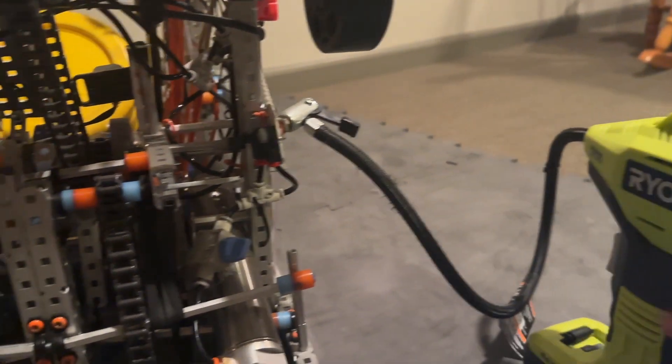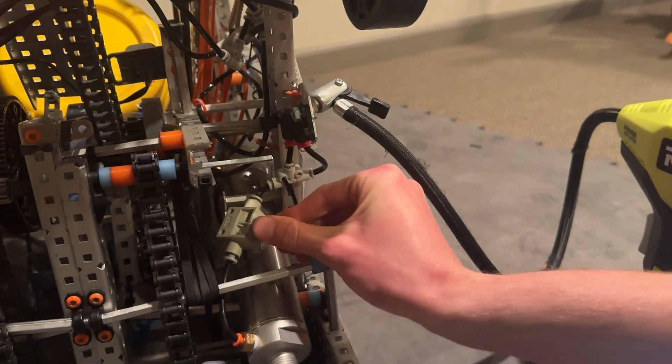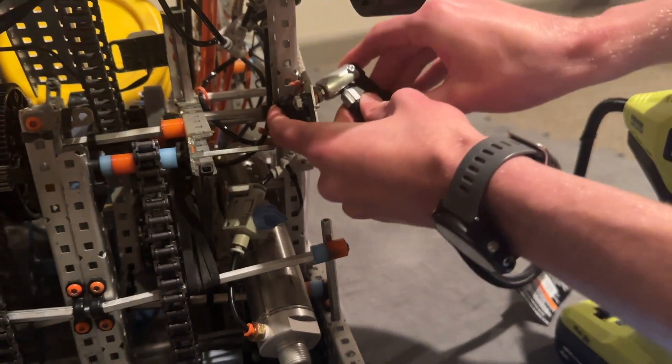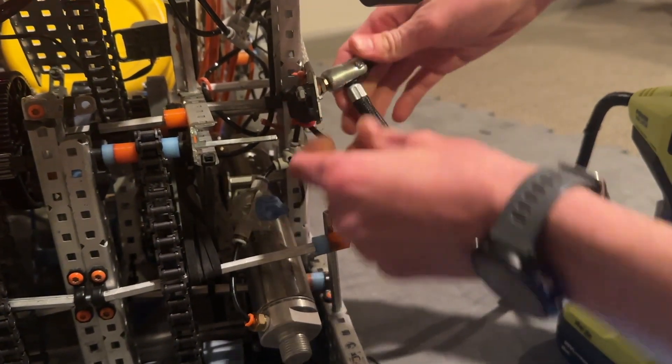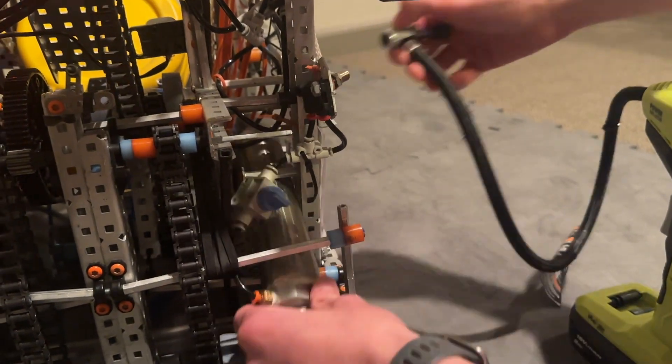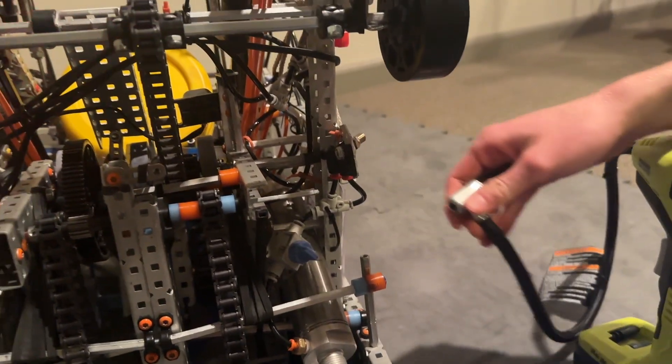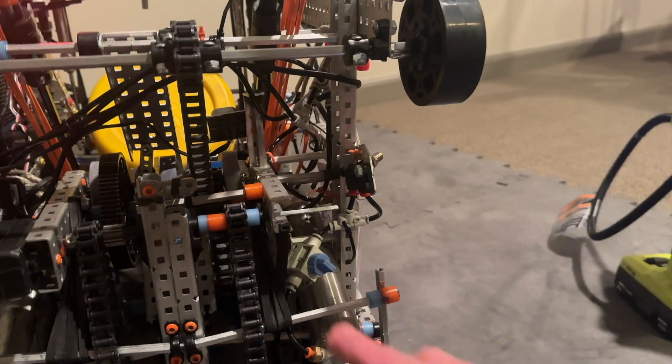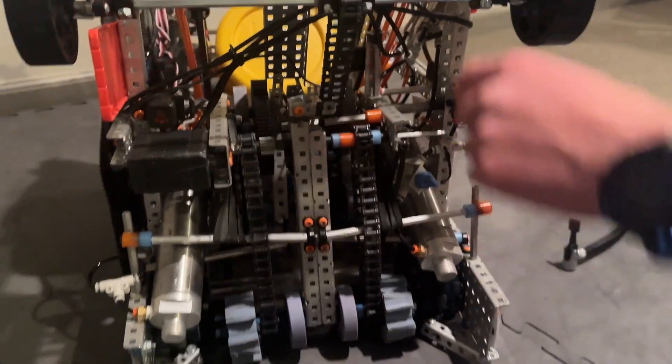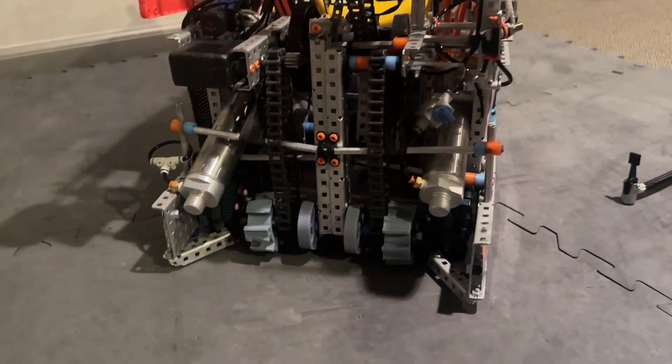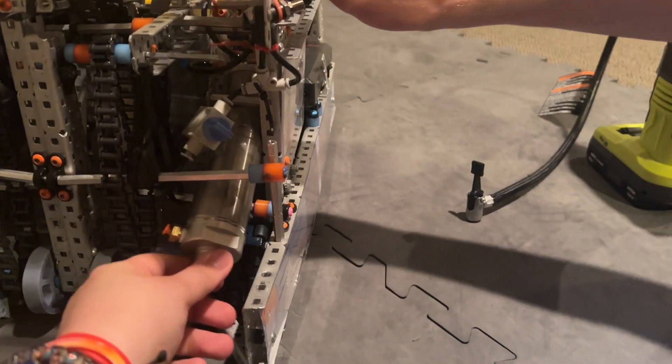When you get to 100 PSI you just close that off. Then when you take this off you don't actually lose any air so the main system still stays at 100 PSI. You don't have to worry about quickly taking it off or anything.